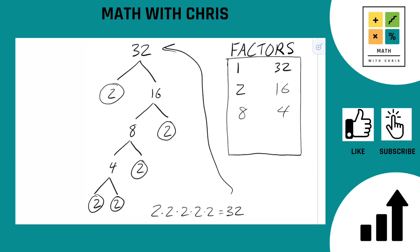No other combination works. We got 6 factors of 32. Those are 1, 2, 4, 8, 16, and 32.